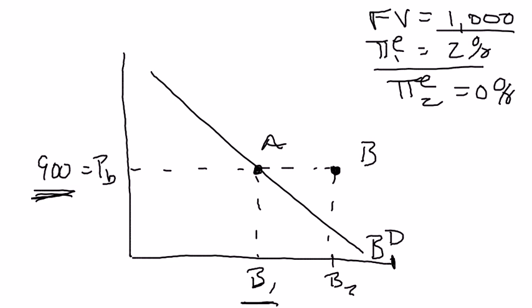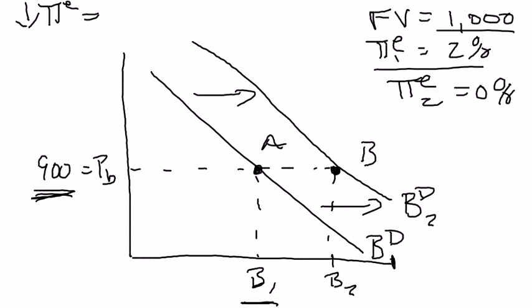Point B clearly is not on this initial bond demand curve, so there must be some new bond demand curve, which we'll call bond demand 2. The bond demand curve has shifted to the right. If you decrease expected inflation, that's going to shift bond demand right. Why does it shift to the right? Because the lower the inflation rate, the more that $1,000 is worth a year from now, the more people want to purchase those bonds. It's a better financial investment.